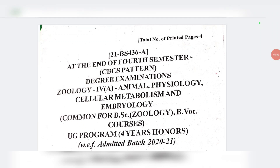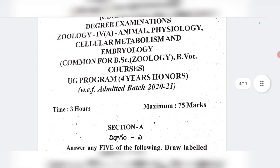Hi, hello, welcome back to Homely Classes. Geology 4A: Animal Physiology, Cellular Metabolism and Embryology — real question paper. University exams have started for the 2020 and 2021 batch. This is a real question paper, not a model paper. Important questions from within this paper have around 60-70% chances of appearing in the university question paper.